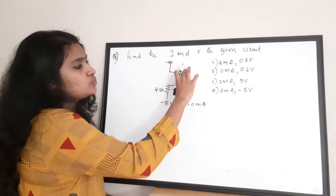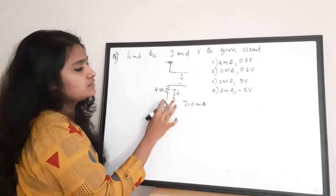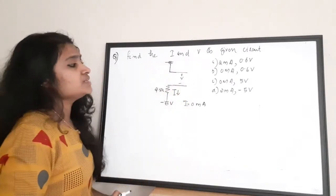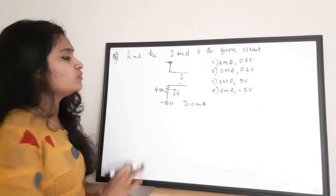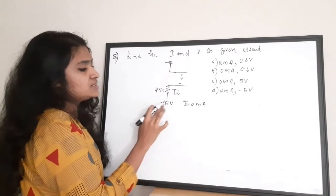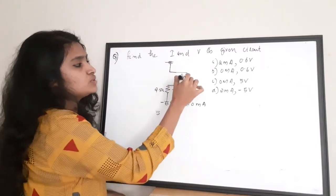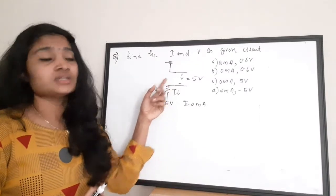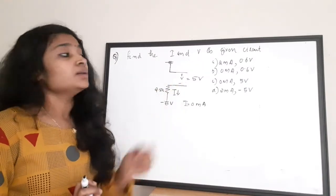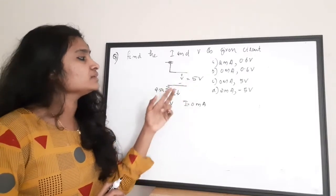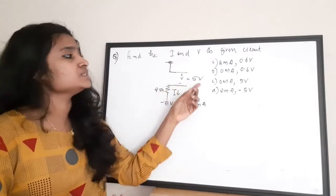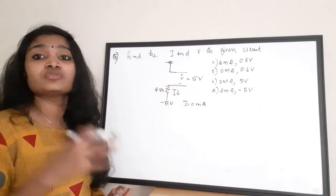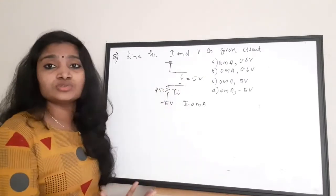Now, what is the value of voltage? Applying Thevenin's equivalent theorem across this connection: since the diode is in reverse biased condition and the source is minus 5 volt, the voltage coming across the diode terminals is 5 volt. If it were forward biased, it should have been minus 5 volt. Since it is reverse biased, the voltage is 5 volt and the current through the resistor is 0. The correct answer is option C: 0 milliampere and 5 volt.